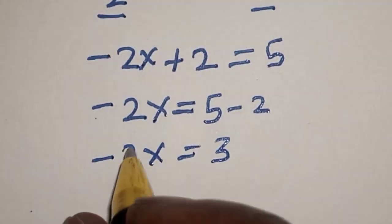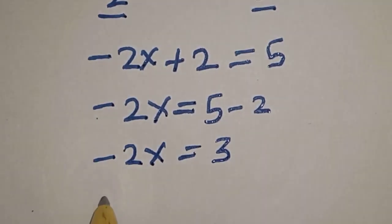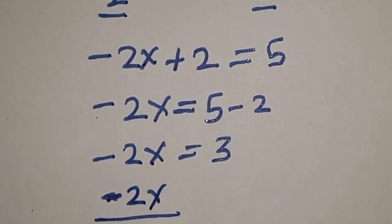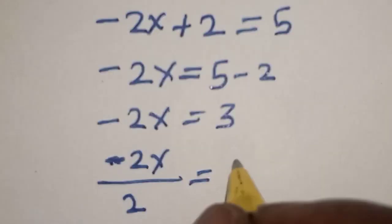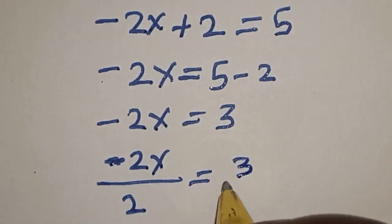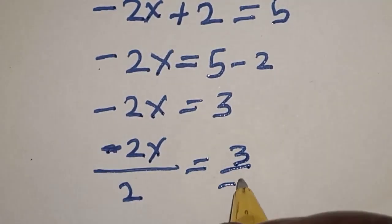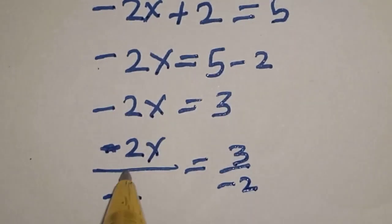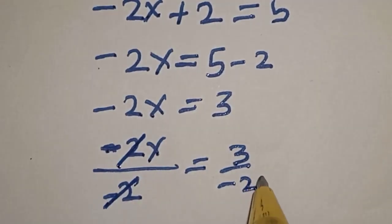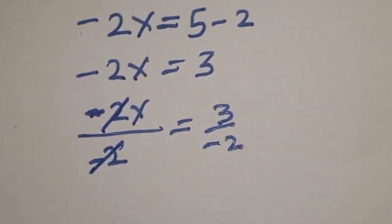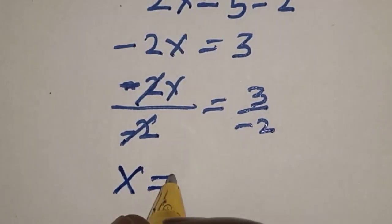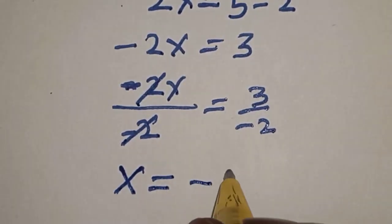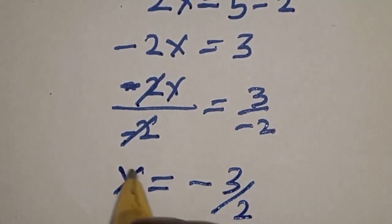Let's divide both sides by negative 2. We have minus 2s divided by minus 2 is equal to 3 divided by minus 2. This cancels, therefore s is equal to minus 3 over 2. That is the value of s.